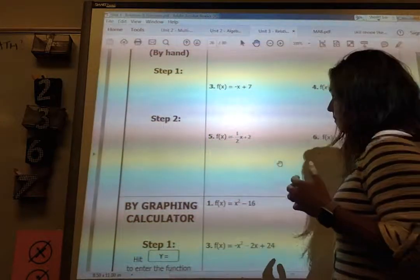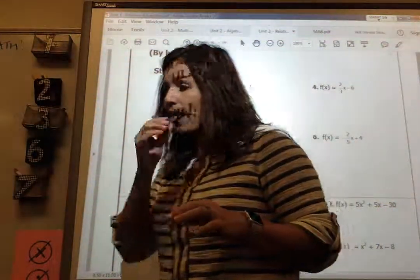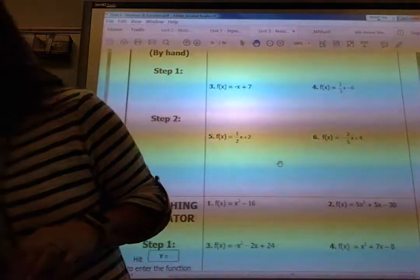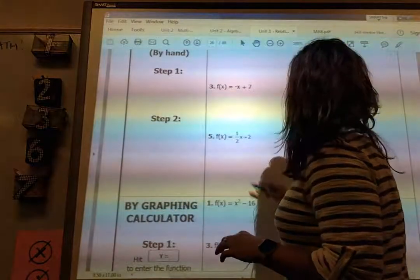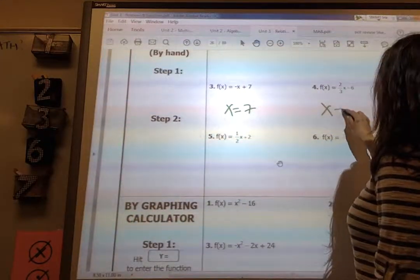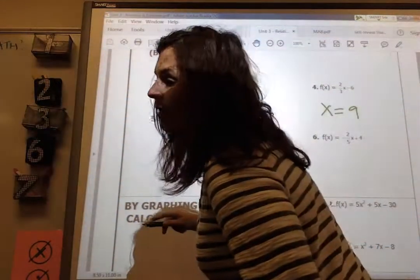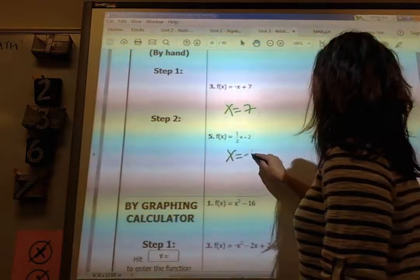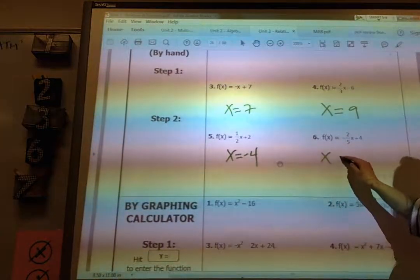Okay. So hopefully you got the answers to these. Number 3 is x equals 7. Number 4 is x equals 9. Number 5 was x equals negative 4. And number 6 was x equals 10.